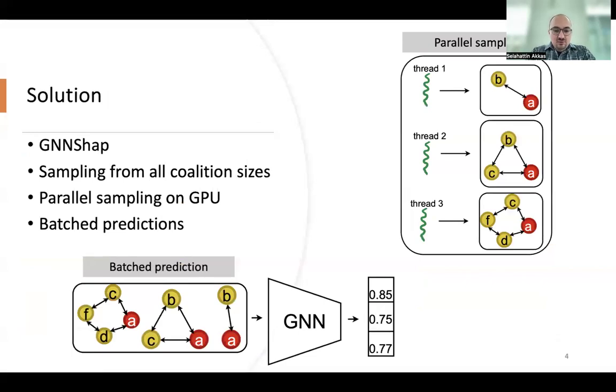In this work, we propose GNN SHAP explanation model. It samples from all coalition sizes, generates samples fast in parallel on GPU, and batches sample coalitions to reduce total prediction time.